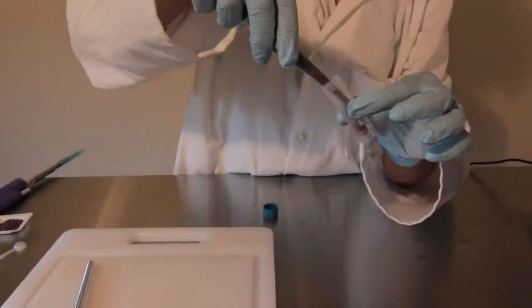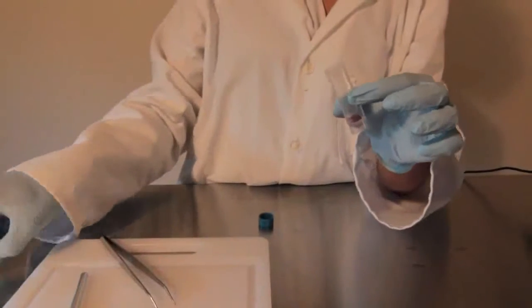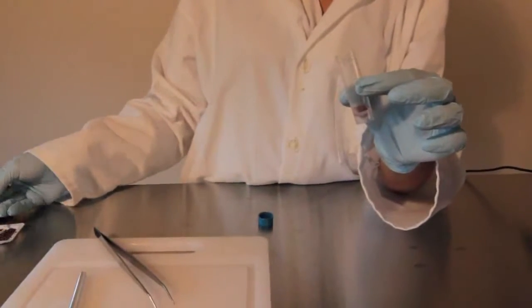First, place the sample in the bottom of the tube. Don't stuff it down there because you want the tissue to be able to move around inside.